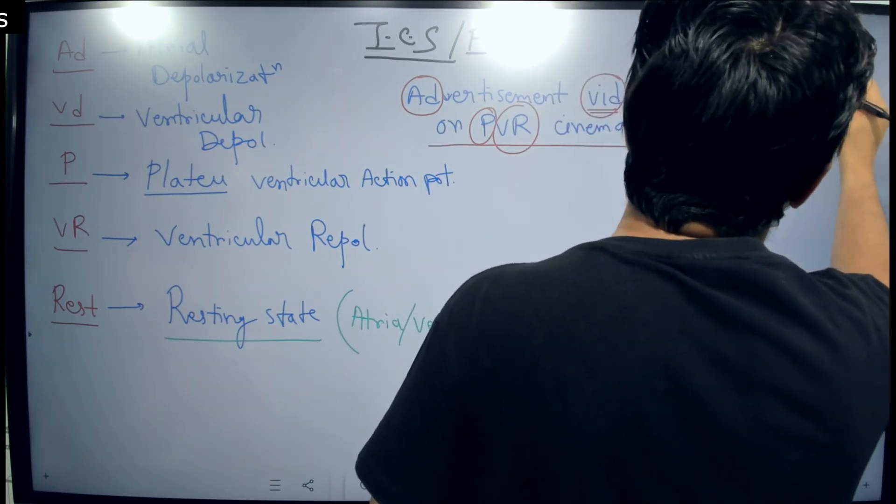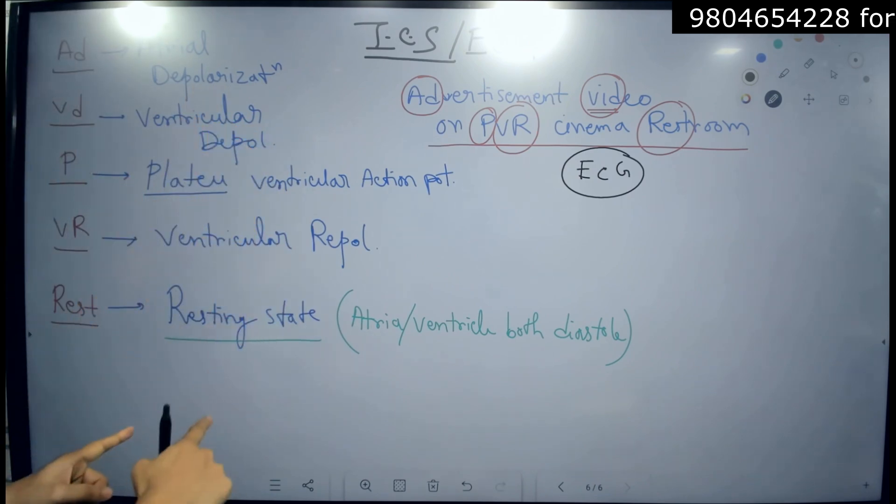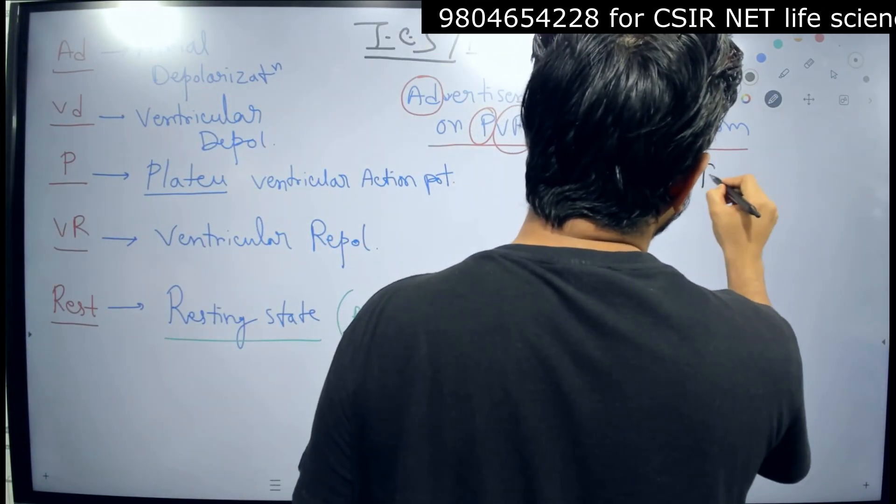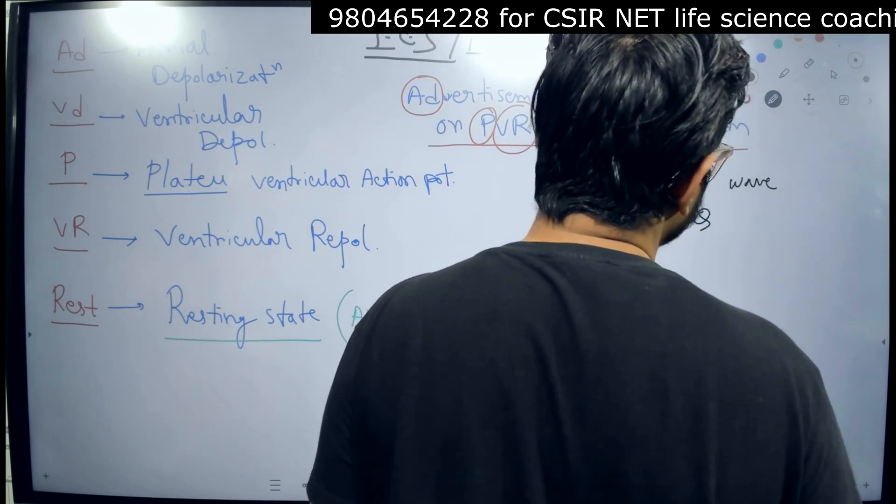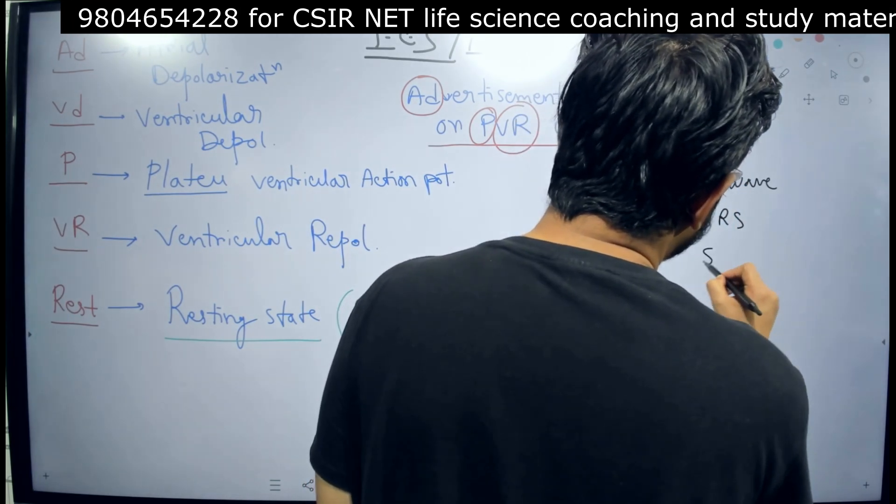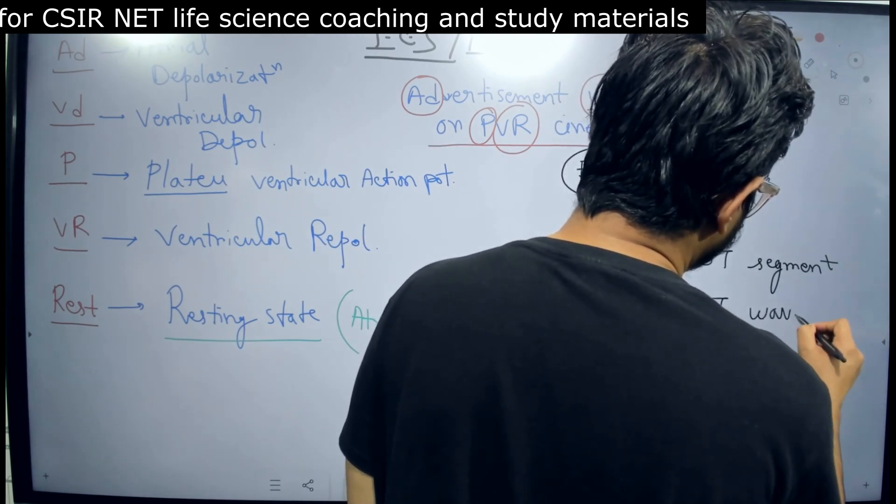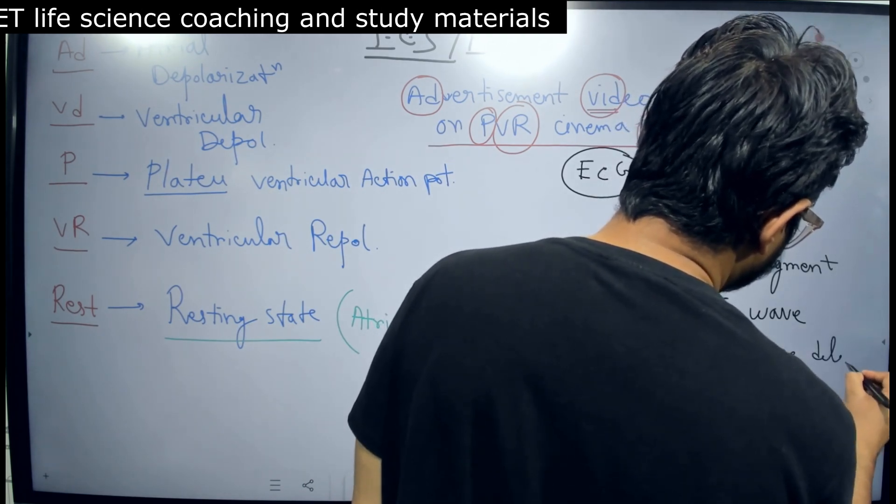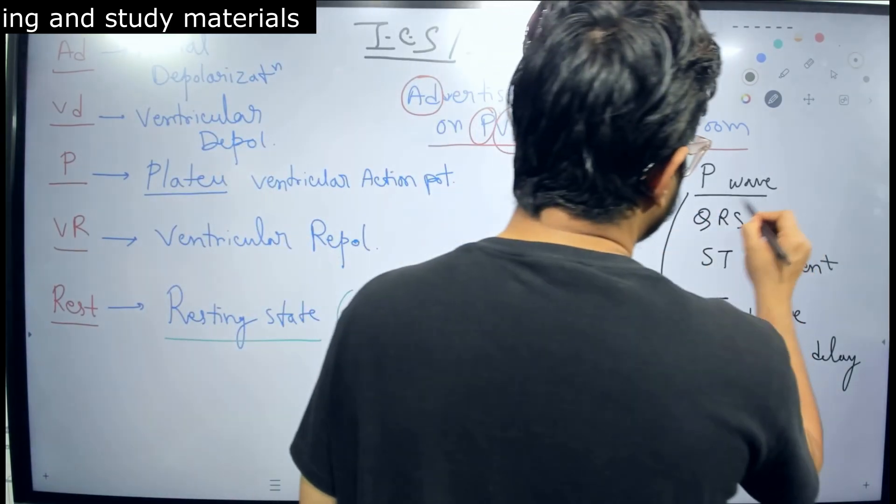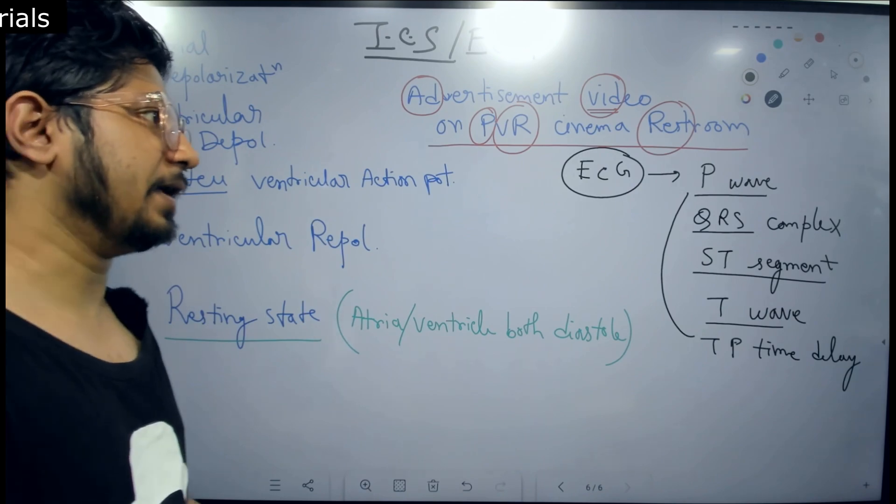Now, how can we assign the different ECG graph or the phases of ECG that detects the different stages like atrial depolarization, ventricular depolarization, ventricular repolarization. And how ECG detects it? Because in ECG graph, what we have? We have P wave, QRS, then we have QRS, then we have ST segment, then we have T, this is another wave. Time or time delay between the T and the next P. So these are the components of ECG: P wave, QRS complex, ST segment, T wave and then the TP time delay.